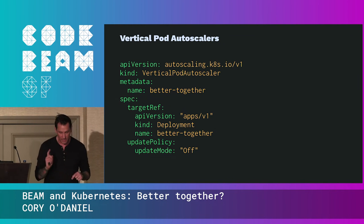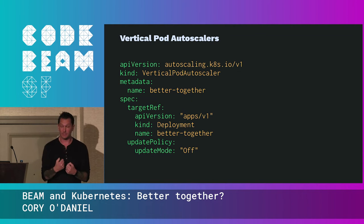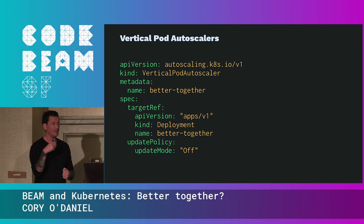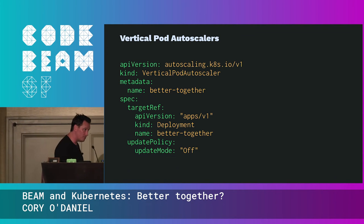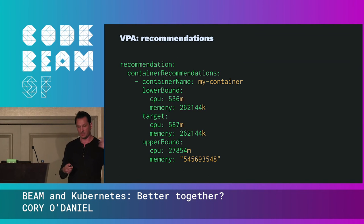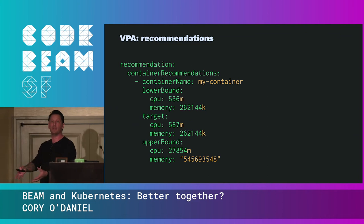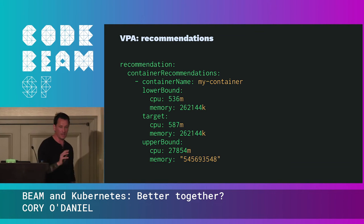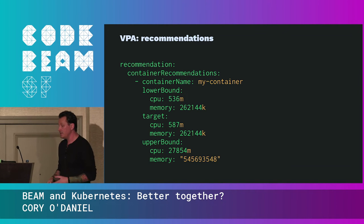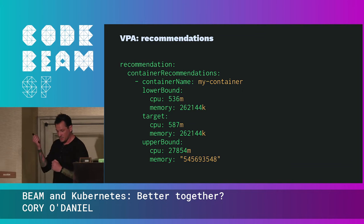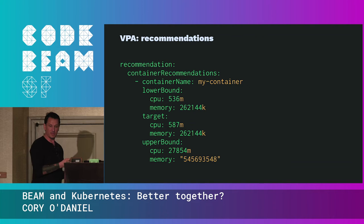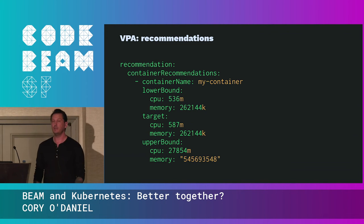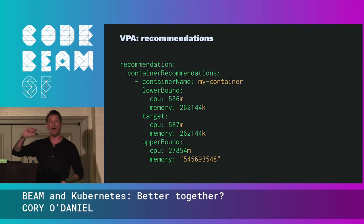Vertical pod auto-scalers add compute and RAM resources to your pods. This newer resource has two modes: off and auto. 'Off' makes recommendations — Kubernetes watches your application, gets an idea of what RAM and CPU should be, and posts recommendations to your VPA of what it would have set. If you don't quite trust Kubernetes to tweak your RAM and CPU automatically, you can see what it recommends and punch that in yourself. 'Auto' mode does have one quirk: when it adjusts your Cgroups, it restarts your pod. When Kubernetes makes a change, it posts an annotation to your pod explaining in English what it did.